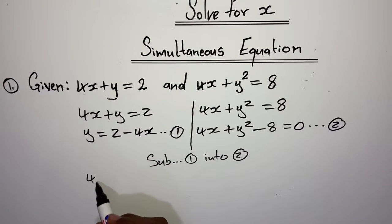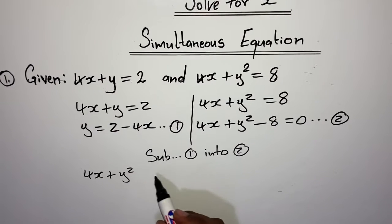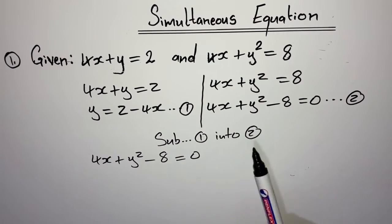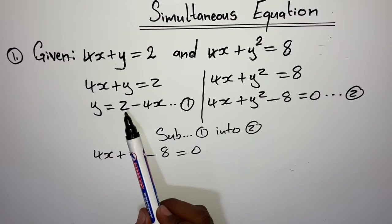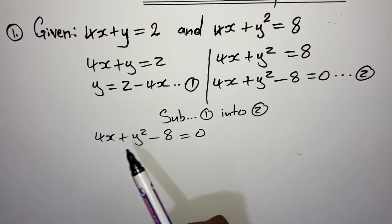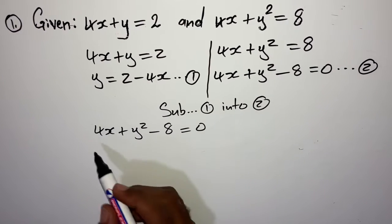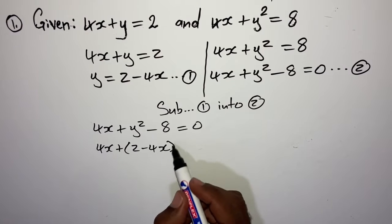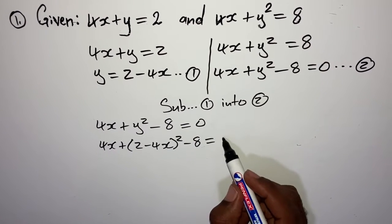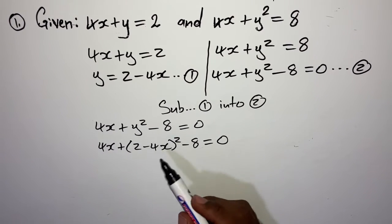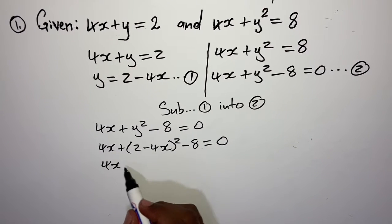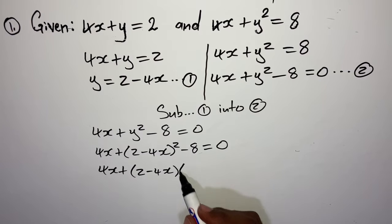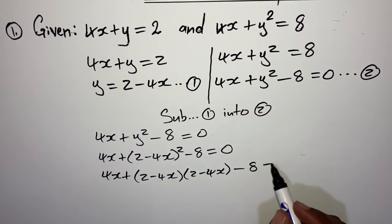My equation 2 is: 4x plus y squared minus 8 being equal to 0. Substitute equation 1 into 2. Equation 1 is y equals 2 minus 4x. So on equation 2, where you see y, you'll have to substitute 2 minus 4x. So: 4x plus (2 minus 4x) squared minus 8 is equal to 0.